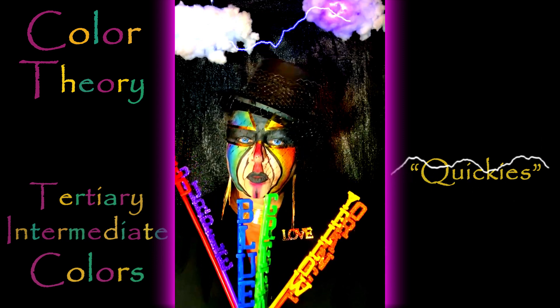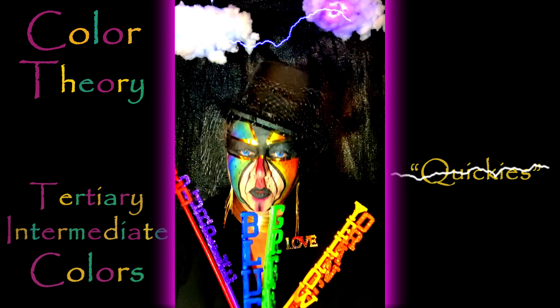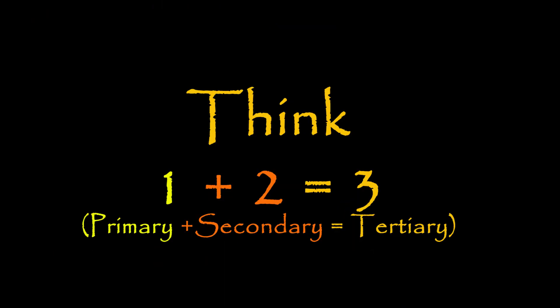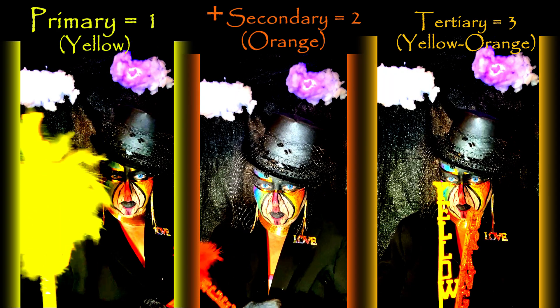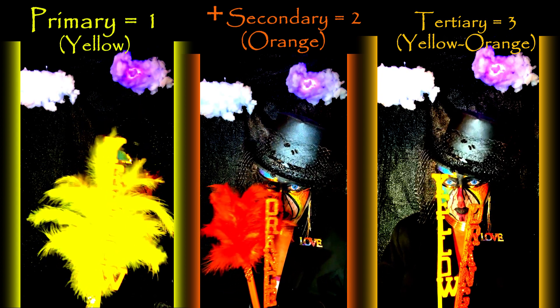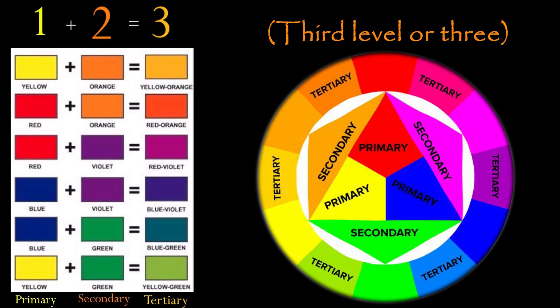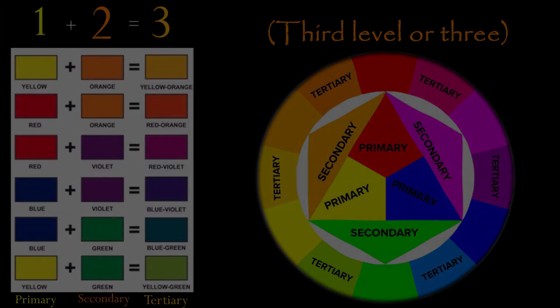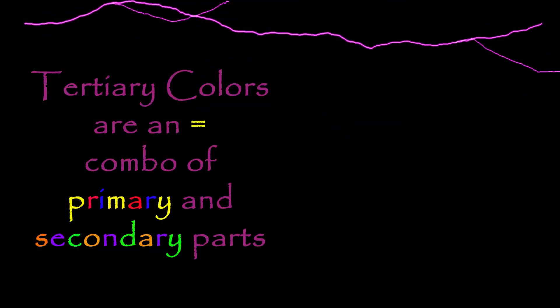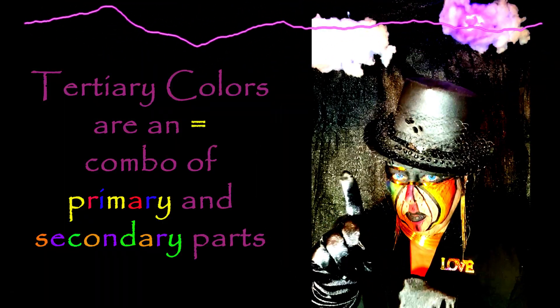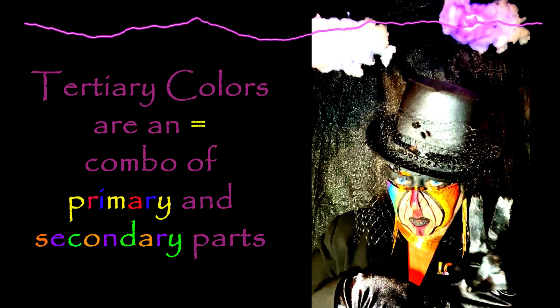Tertiary intermediate colors: primary plus secondary equals tertiary. Third level, or tertiary colors, are an equal combination of primary and secondary parts.